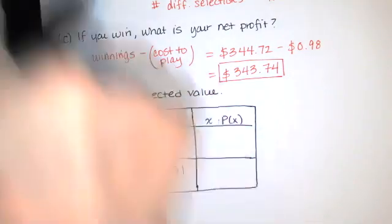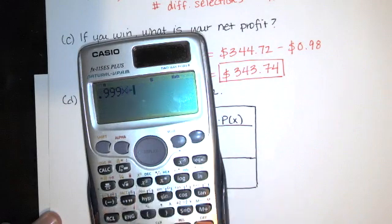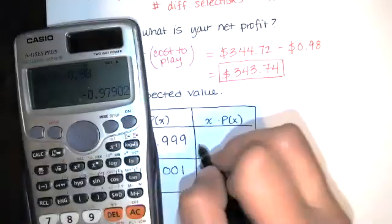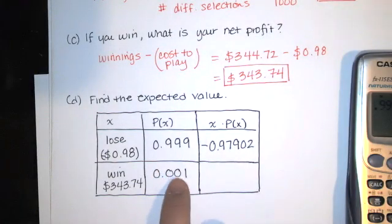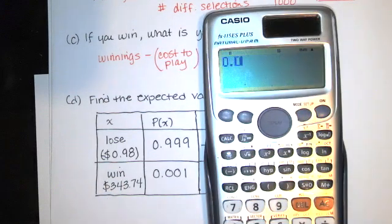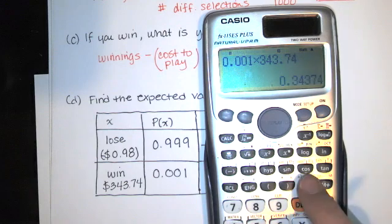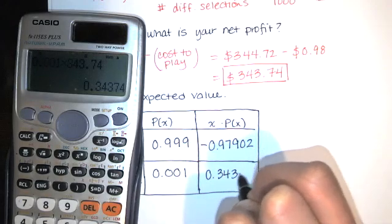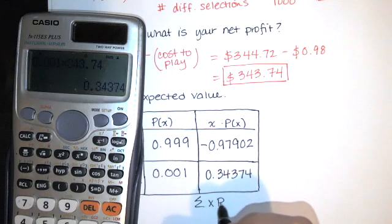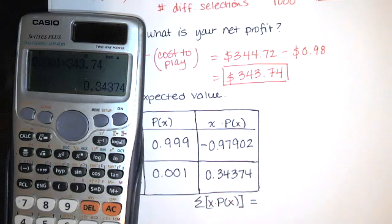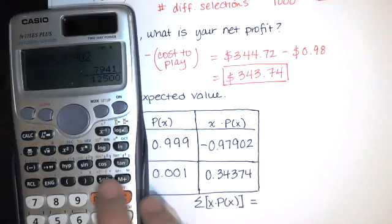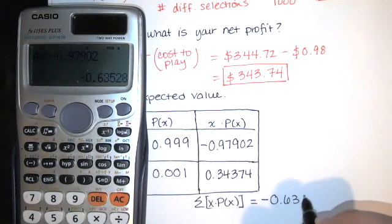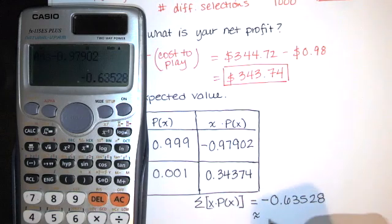So we've got 0.999 times negative 0.98, and we get negative 0.97902. Then you've got 0.001 times that amount if you win, and so that is 0.34374. And if you add those two together, you get the expected value. So I'm just taking that and I'm going to subtract 0.97902. So that's a negative 0.63528, and we're probably going to round to two decimal places. So your expected value is a negative 64 cents.